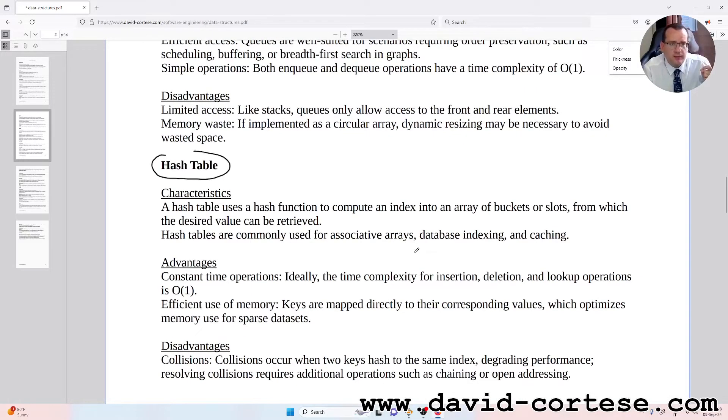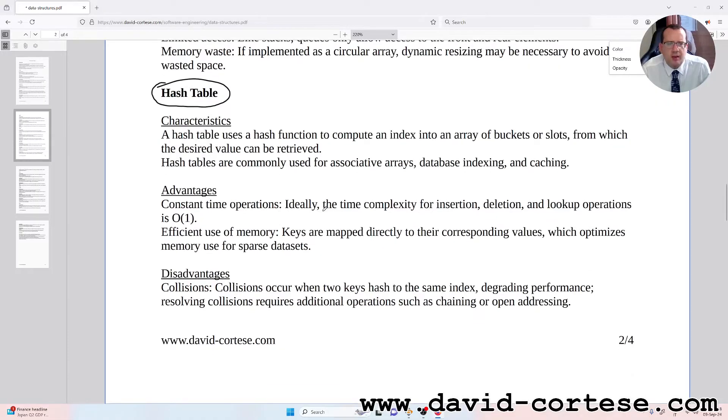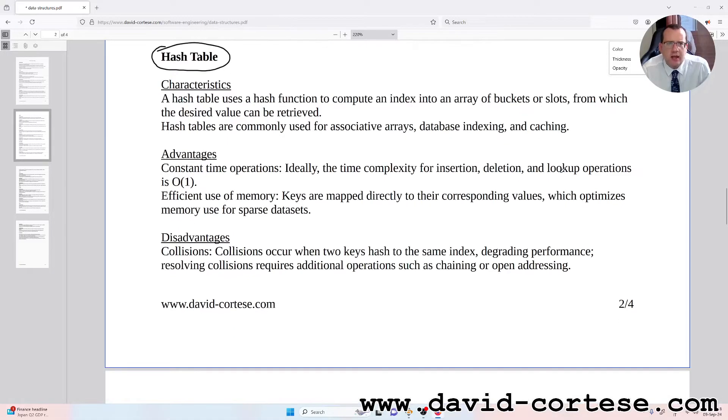Memory waste: if implemented as a circular array, dynamic resizing might be necessary to avoid wasted space. Hash table characteristics: a hash table uses a hash function to compute an index into an array of buckets or slots from which the desired value can be retrieved. Hash tables are commonly used for associative arrays, database indexing, and caching.